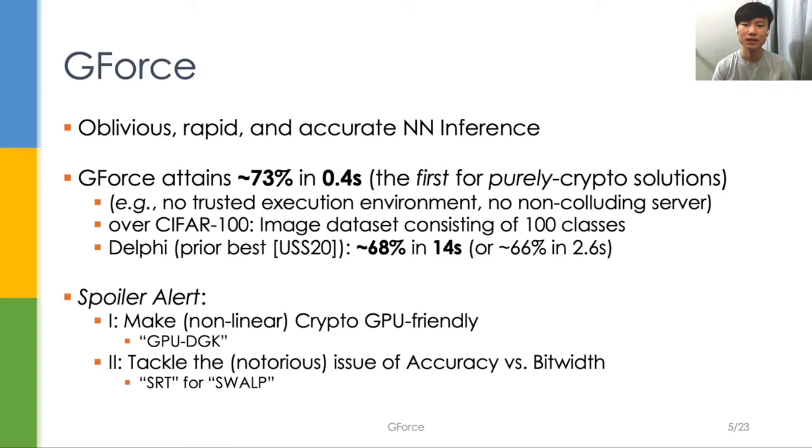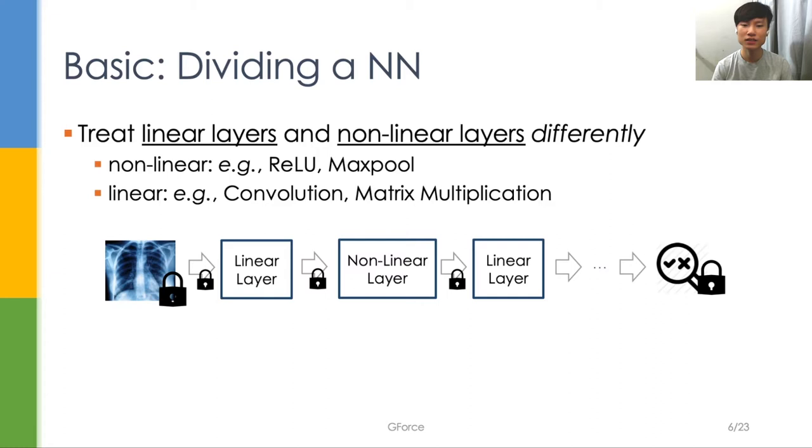A common paradigm in oblivious inference is to treat linear layers and nonlinear layers differently. Nonlinear layers consist of activation functions like ReLU or pooling functions like MaxPool, while linear layers usually are convolution or matrix multiplication.